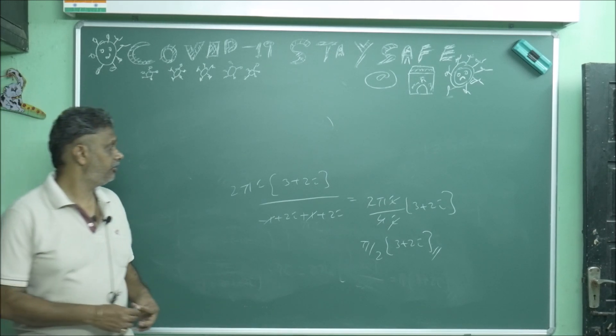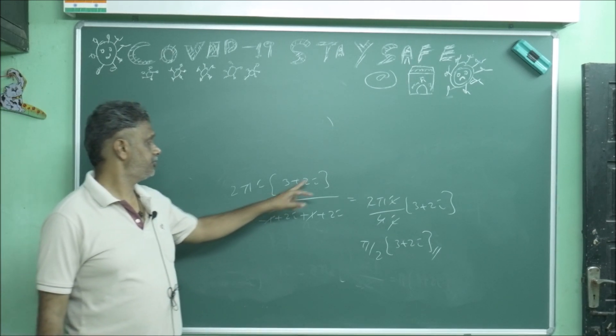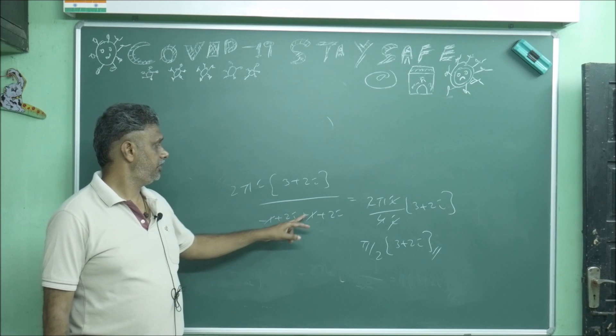See, after adding what you will get: 2πi times (3 + 2i). Actually (-1 + 2i + 1 + 2i), that is 2i + 2i = 4i. This 2i, this 2i cancel. Balance is what? πi(3 + 2i)/2, which is (3π/2) + πi.